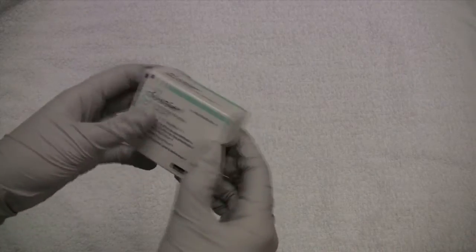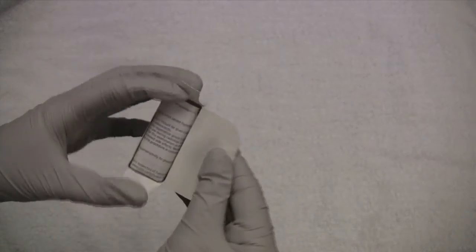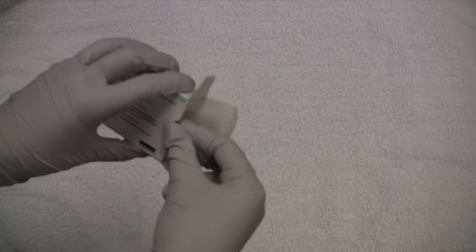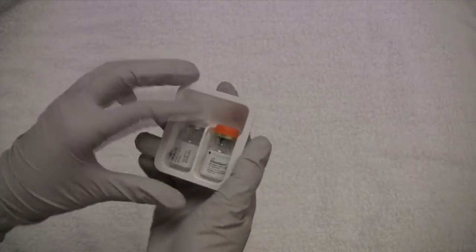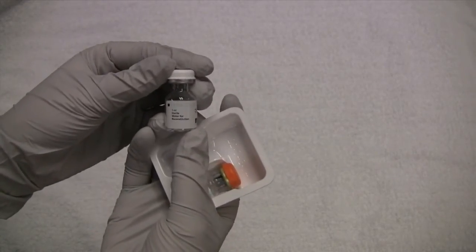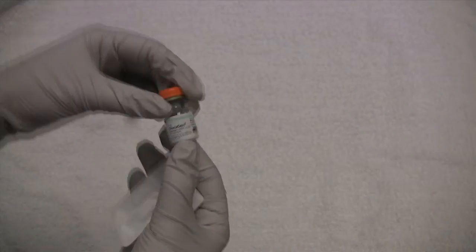So here is our glucagon, we can go ahead and open it up. It comes with an instruction booklet, which you can read at a later date if you really want to. We pull out two small vials. The white vial is 1 mL of sterile water, and the orange vial is our actual powdered medication.